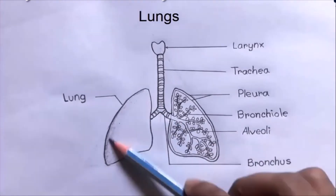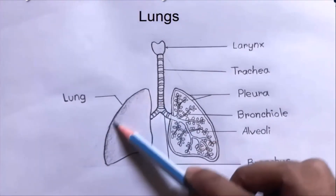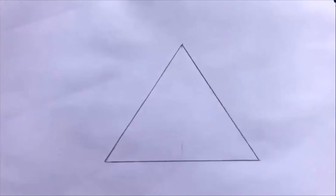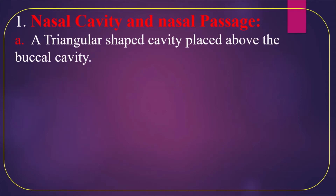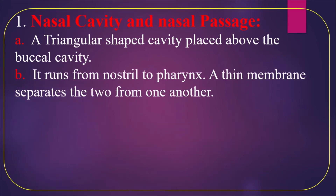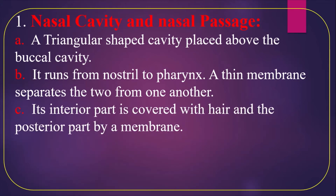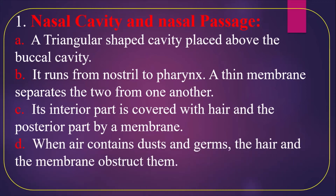The nasal cavity and nasal passages: a triangular-shaped cavity placed above the buccal cavity, running from the nostril to the pharynx. A thin membrane separates the two sides from one another. The interior part is covered with hair and the posterior part by membrane. When air contains dust and germs, the hair and membrane obstruct them.